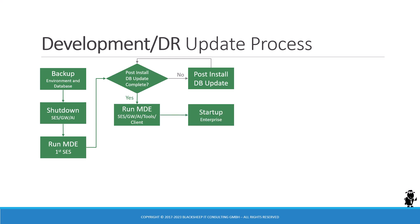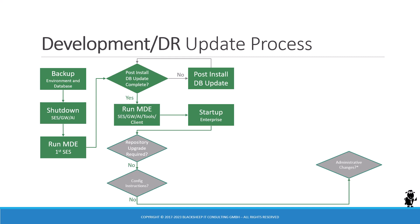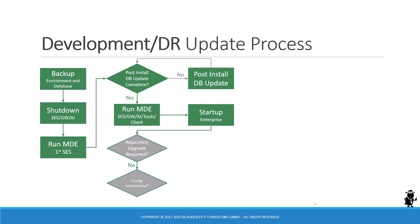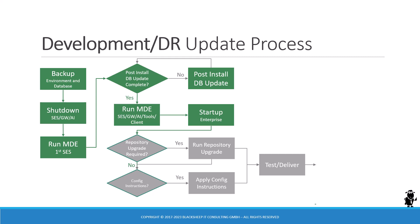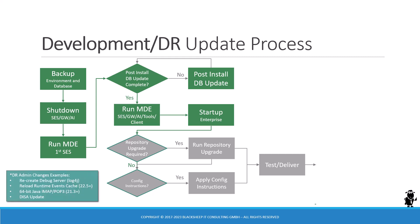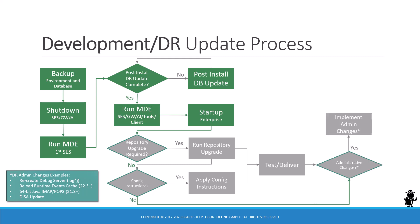Then it's time to start up the development enterprise and decide if you need a repository upgrade. On the fast track — no repository upgrade, no configuration instructions, no administrative changes — you're done with the development update. The longer path is when you have decided to run the repository upgrade; you run it and complete it successfully. If there are configuration instructions, that's developer work in web tools, which has to be tested and delivered. Administrative changes depend on what version you are and what features you're using, so implement those as needed, and then you're done.